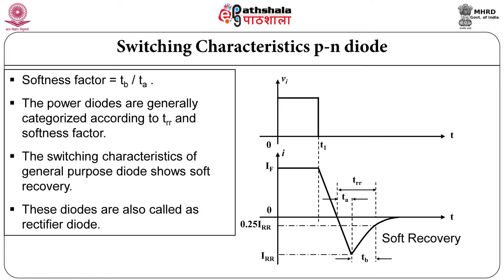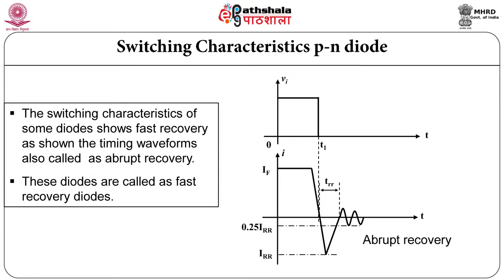Such type of diode is also called as rectifier diode. In some cases the diode may show characteristics where it is recovering at very fast rate, so T_RR is very small — it is called as abrupt recovery. Generally fast recovery diodes show such type of behavior.